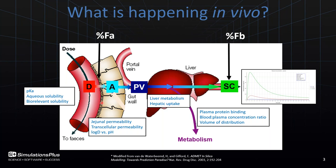Just as soon as the compound enters the enterocytes in the gut wall, that's termed the fraction absorbed. Properties important here are jejunal permeability, transcellular permeability — where a molecule goes between cells in the gut wall rather than through them — and also log D versus pH, which is related to permeability. The compound then enters the portal vein and is delivered into the liver, where liver metabolism and hepatic uptake models examine uptake and metabolism. Once on the other side of the liver, plasma protein binding, blood-to-plasma concentration ratio, and volume of distribution are important as the compound enters systemic circulation. Various CP time curves can be simulated in the HTPK module.